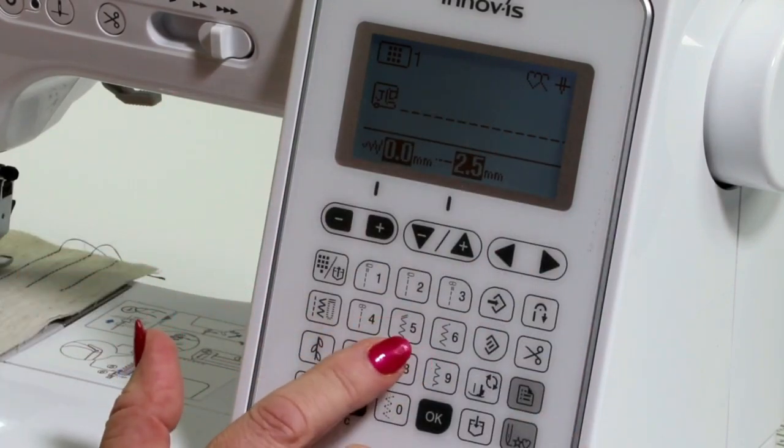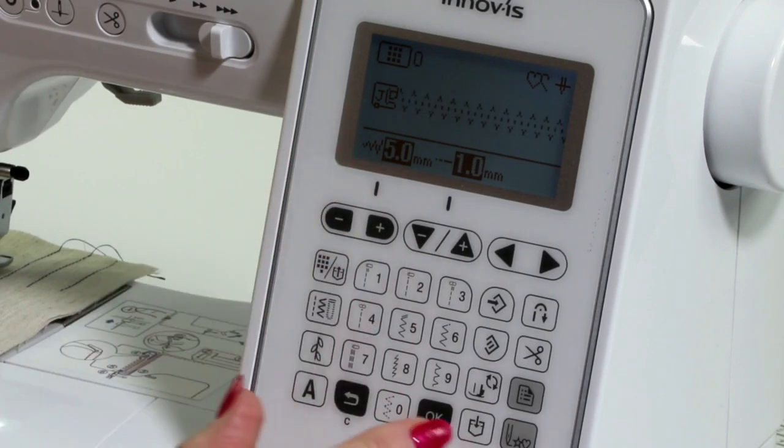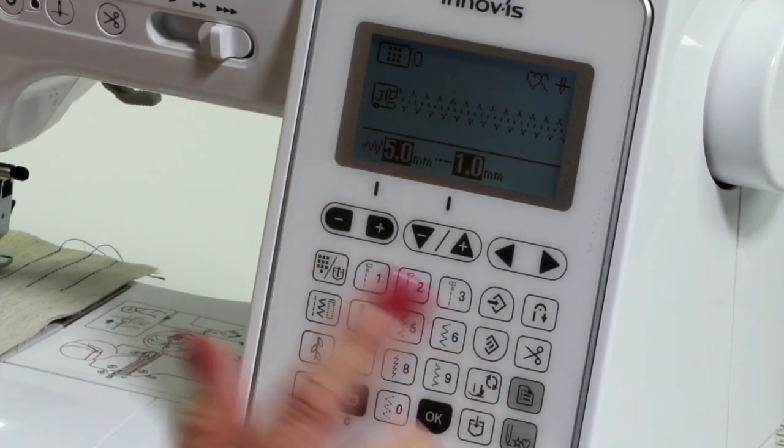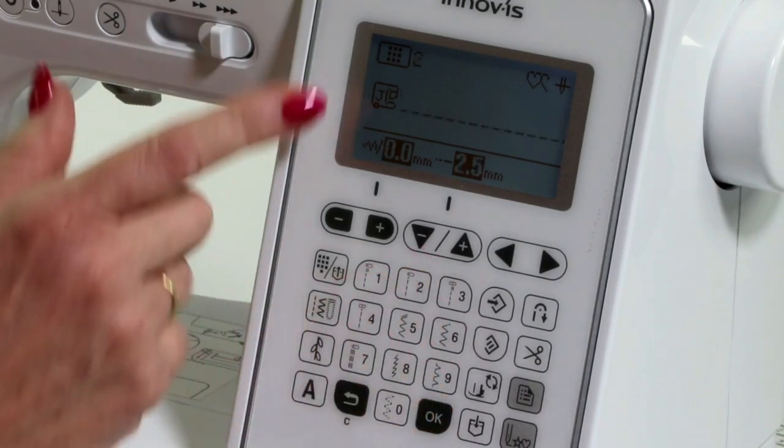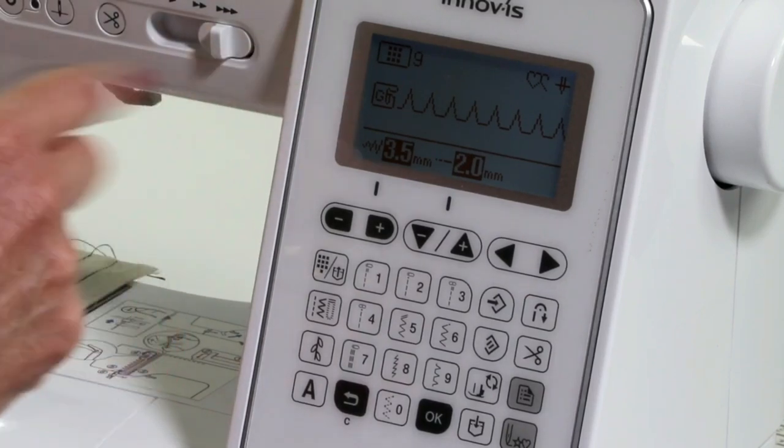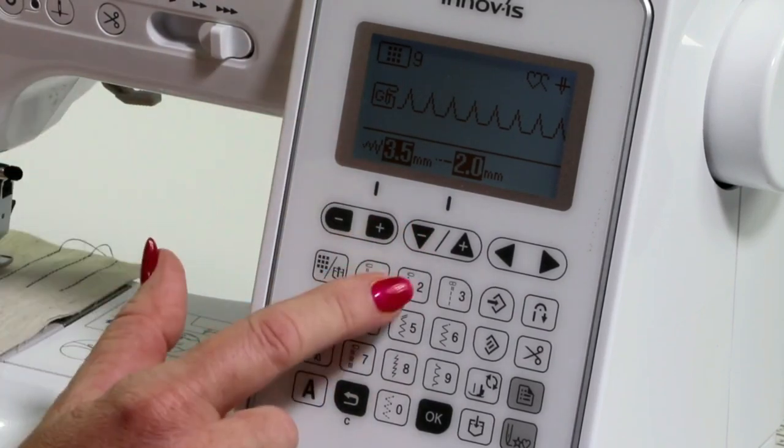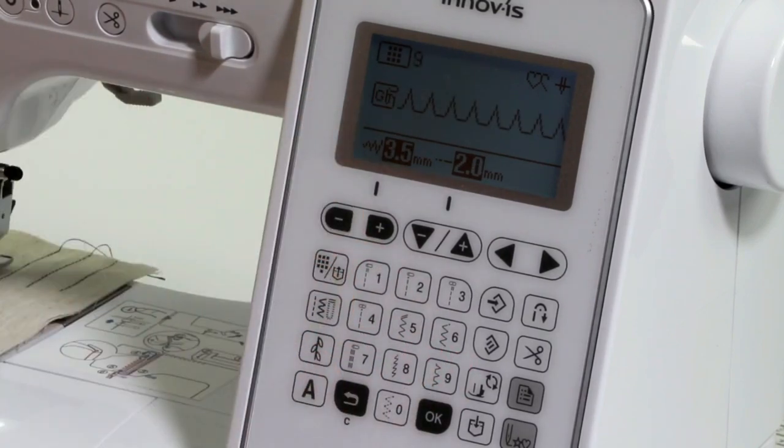For every stitch that I change on the machine, the machine will tell me what foot to use. And you can see here that there aren't any changes. Oh there we go, that one's changed to a G foot. So just at a glance you can see that for that particular stitch I need to put my G foot on.